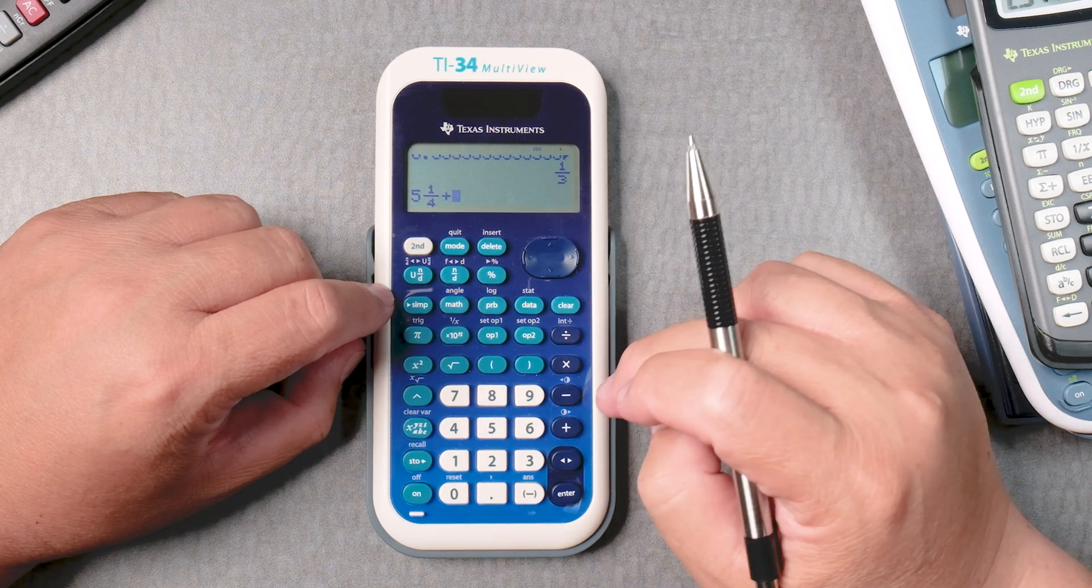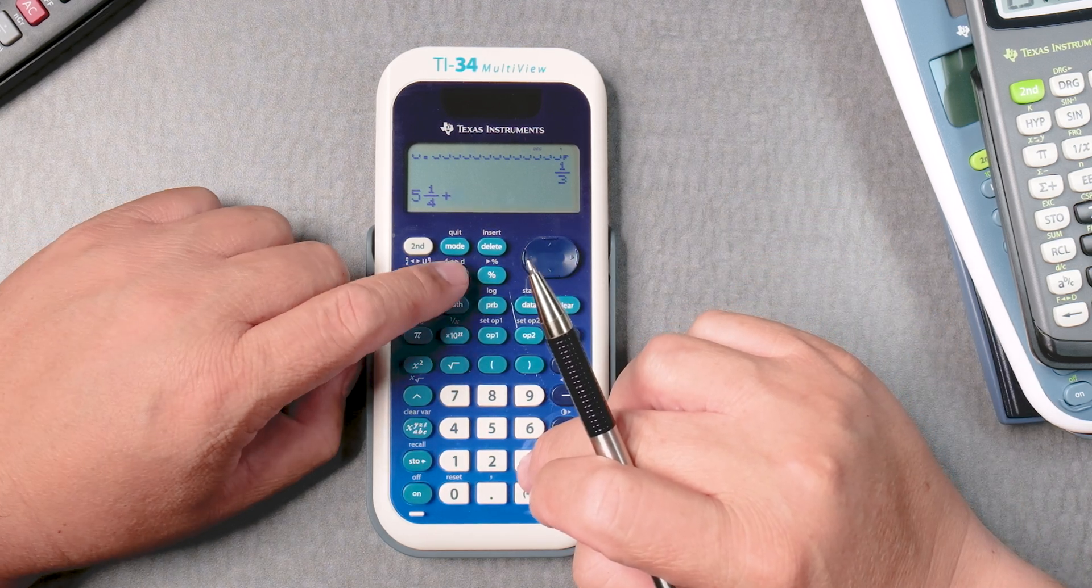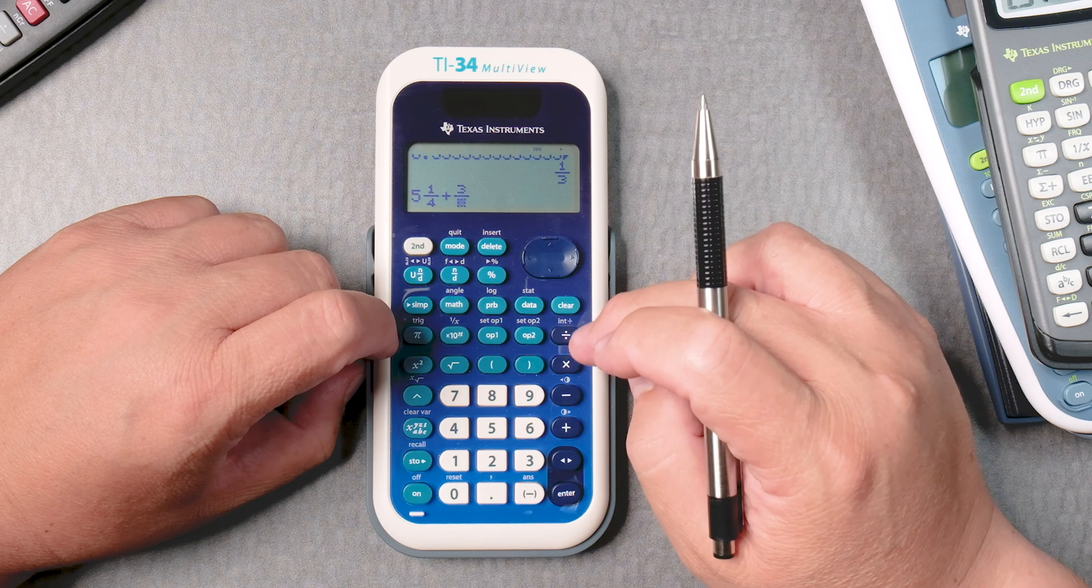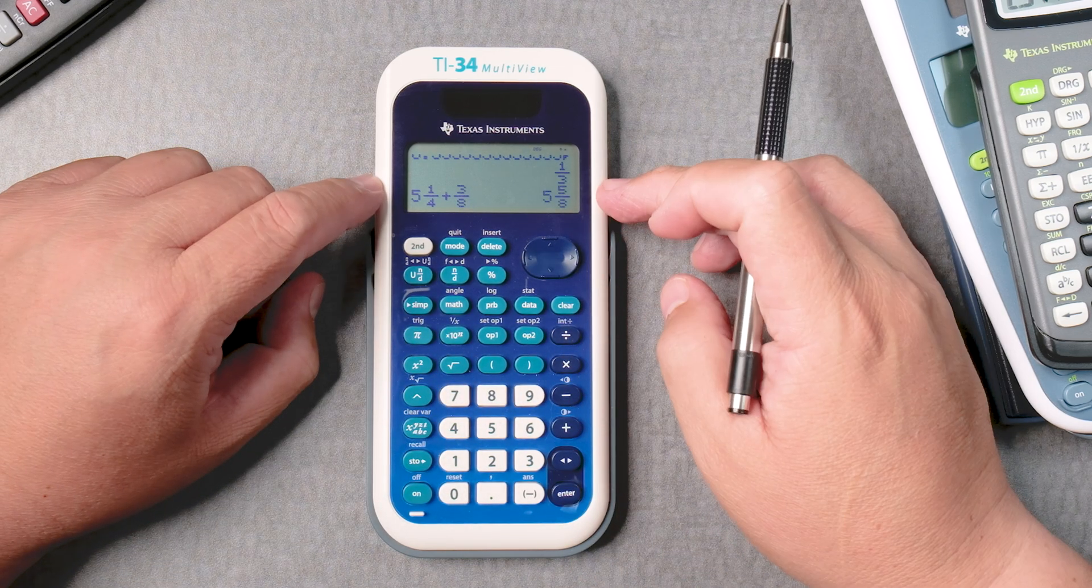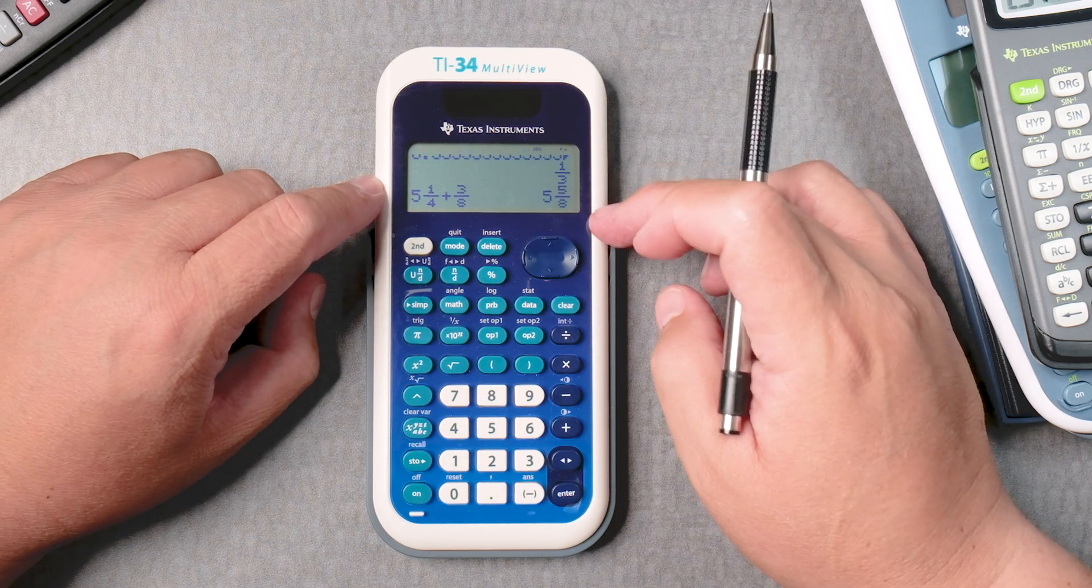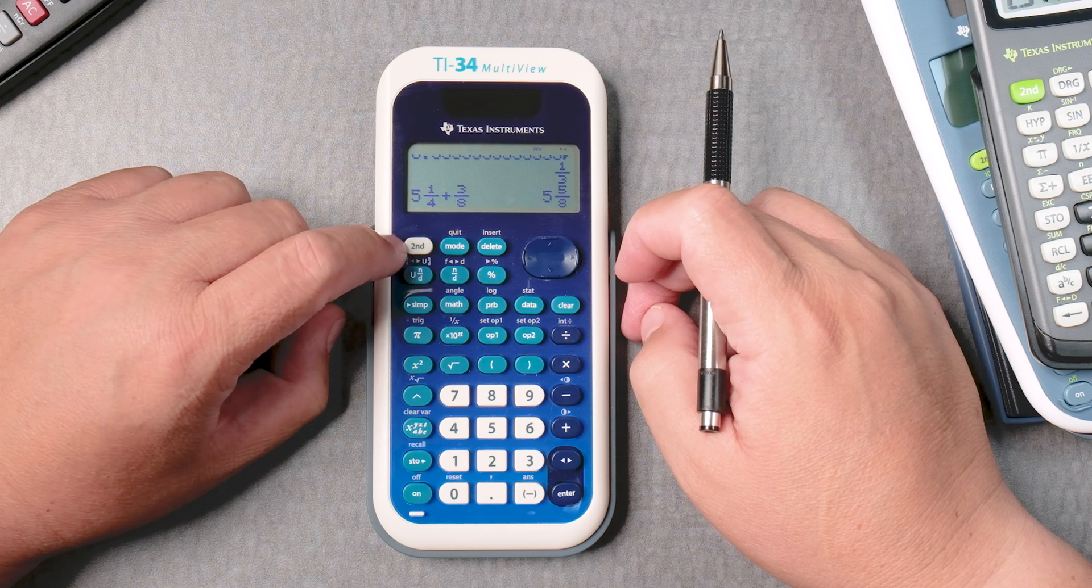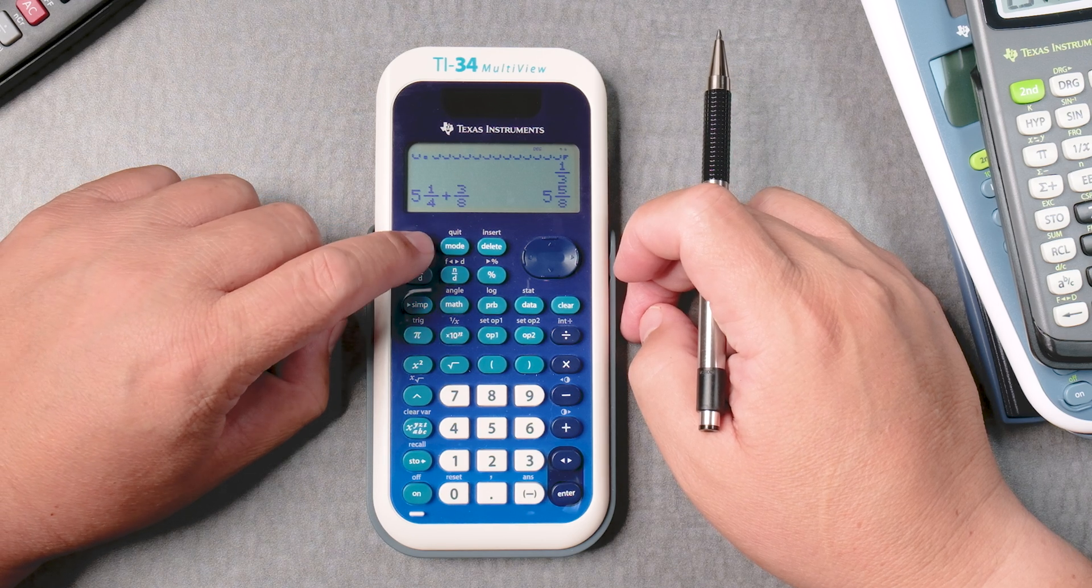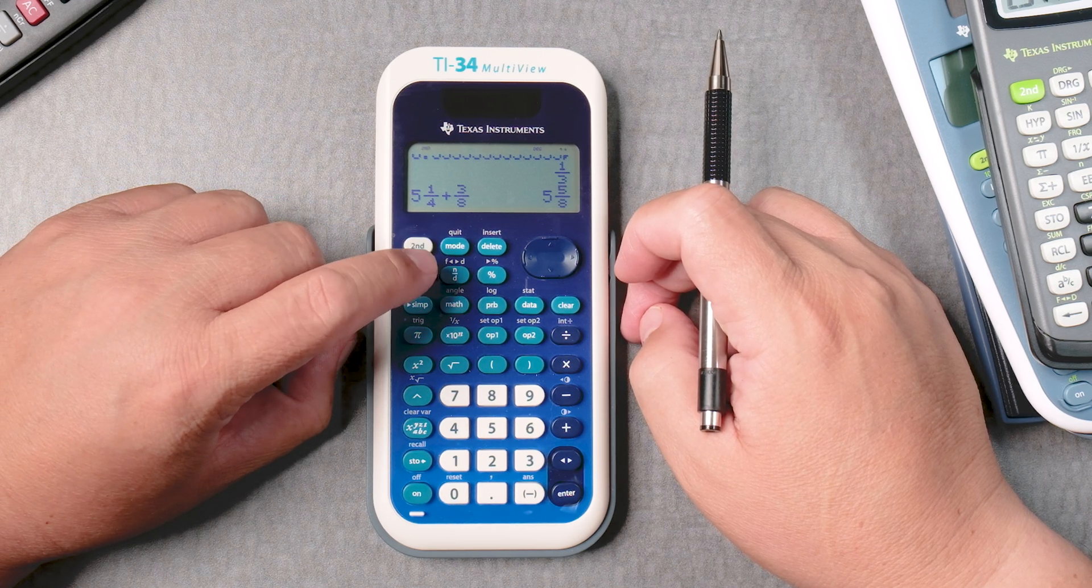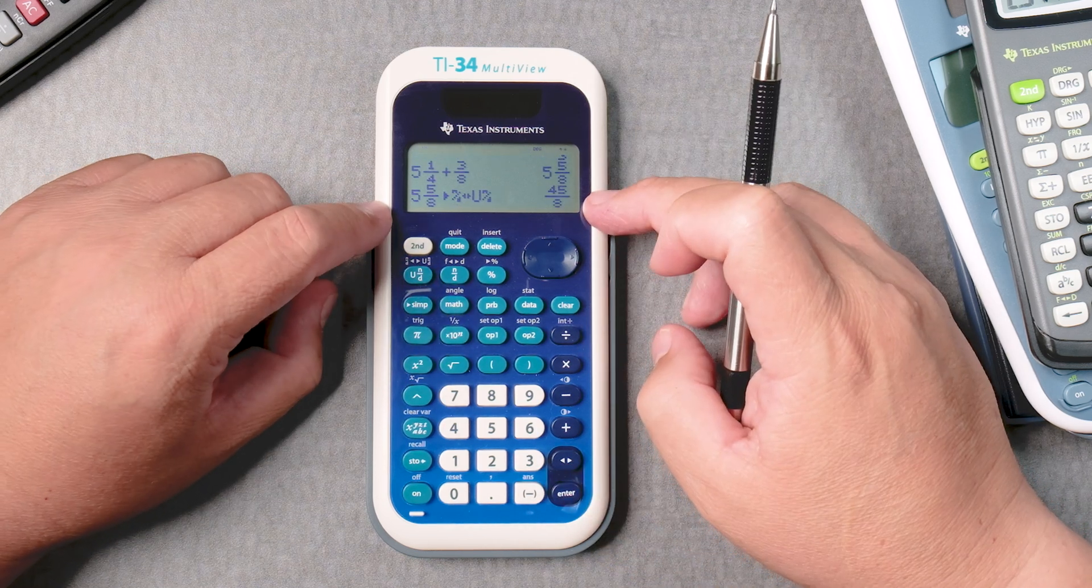plus, we can do the fraction button first if you want, 3, go down, 3 over 8, enter, 5 and 5 eighths. Again, you can change that easily with the second U N D button to make it an improper fraction.